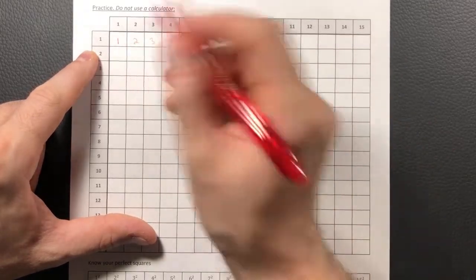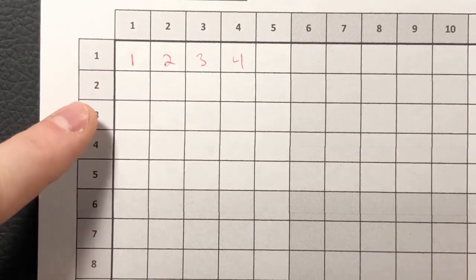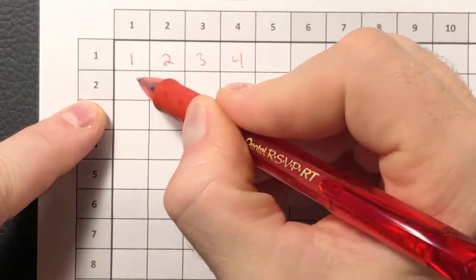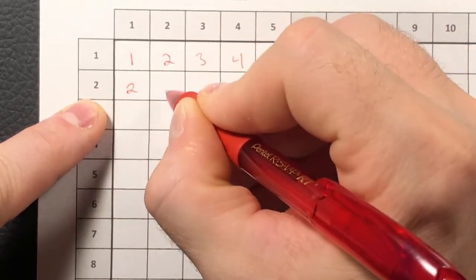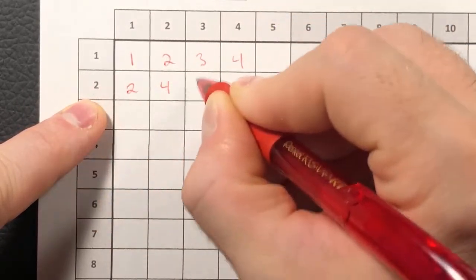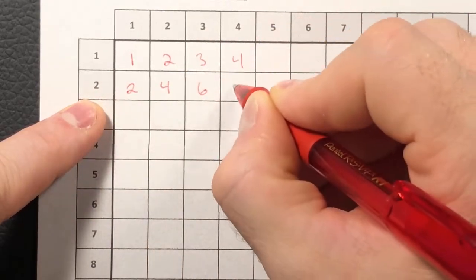If I were to move down a row, and actually let's zoom in so you can see this a little bit better, and as I move down, I would say 2 times 1 will give us 2. 2 times 2 will give us 4. 2 times 3 will give us 6. 2 times 4 will give us 8.